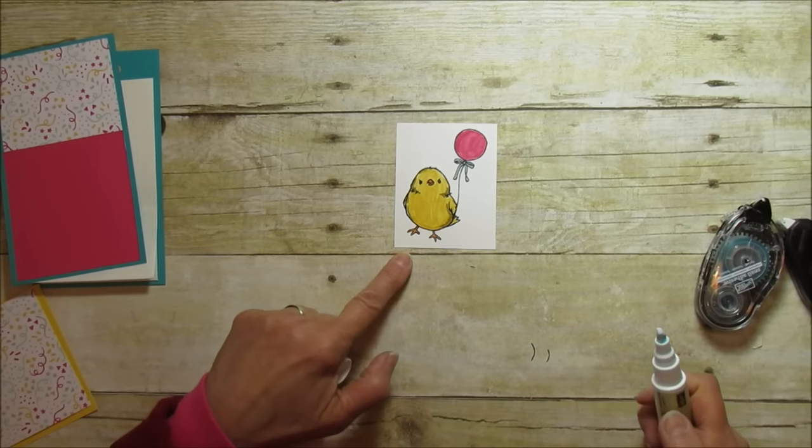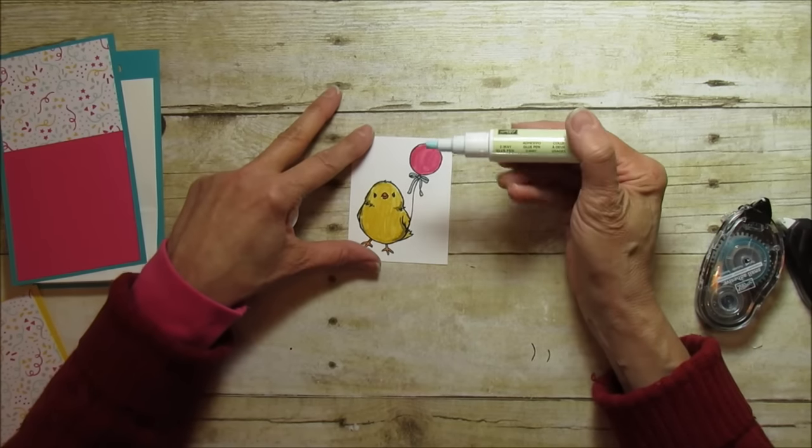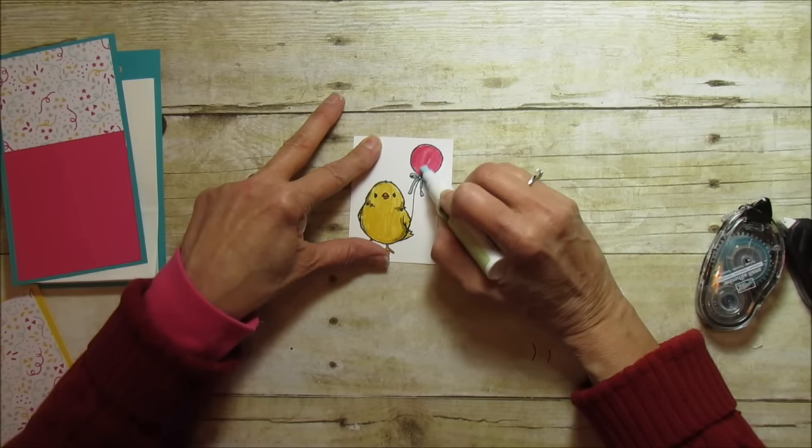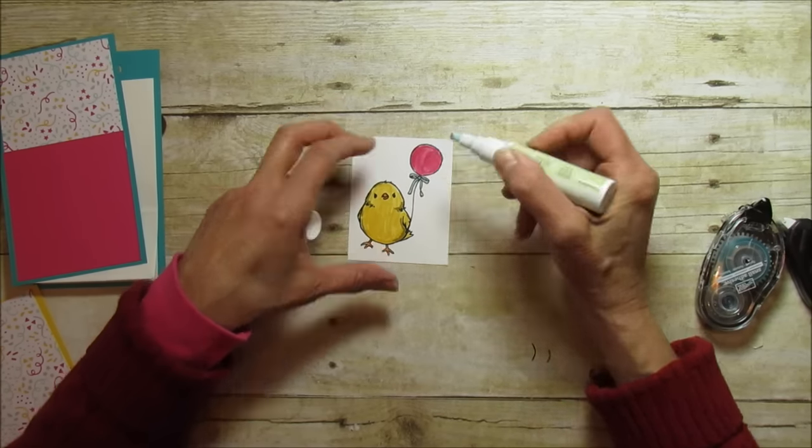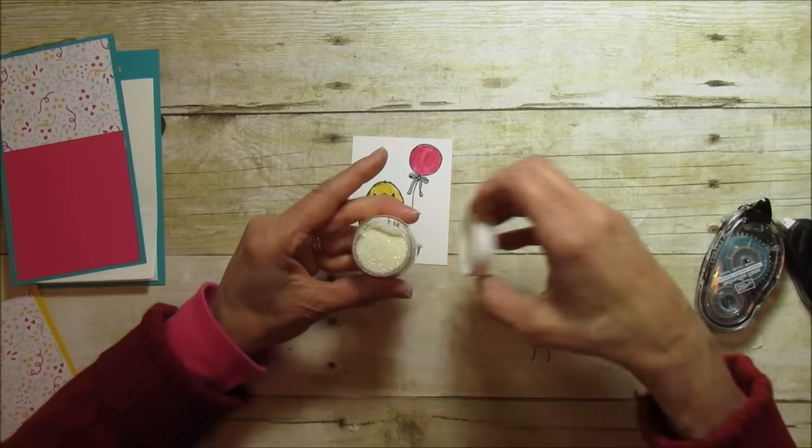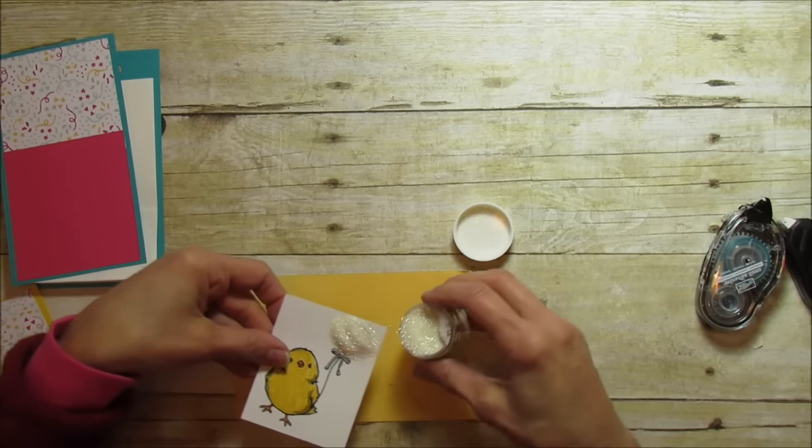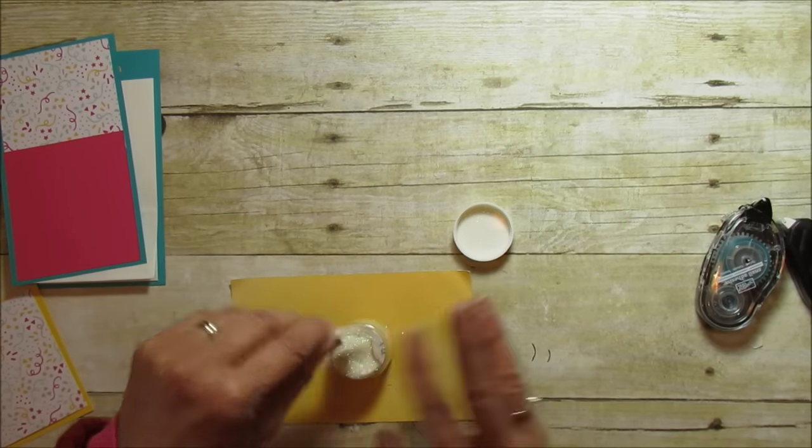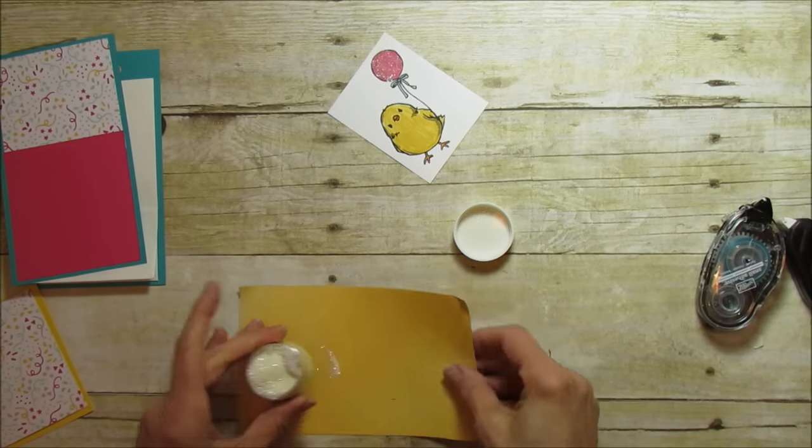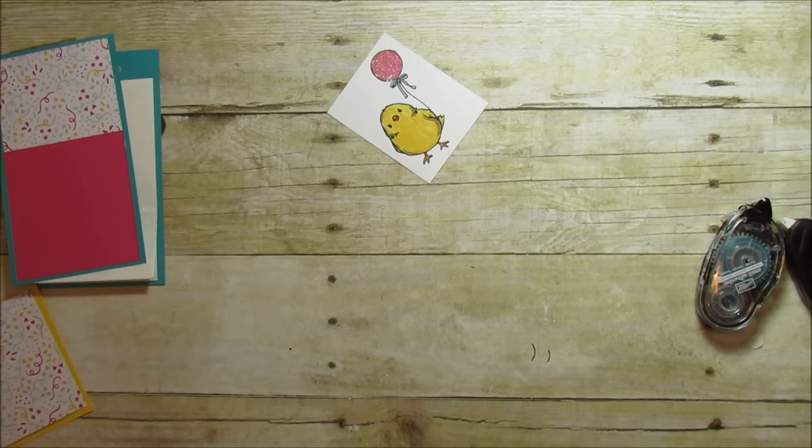Okay so now I have that all colored in and I'm going to use my two-way glue pen here. I'm just going to put a little bit on the balloon because I want to add some glitter to it. It just adds a little bit and then these are dazzling diamond glitter. So see it just adds a little bit of glitter to it. It's really cute.